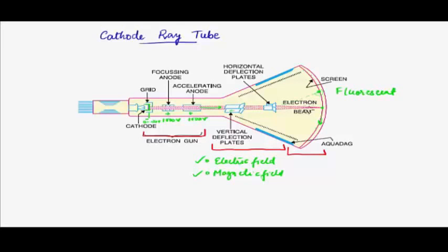By tailoring the potentials on the grid, the potential on the anode, the temperature of the filament, and the electric or magnetic field at the deflection plates, we can produce different patterns or different levels of brightness on the screen. That is basically how a cathode ray tube works.